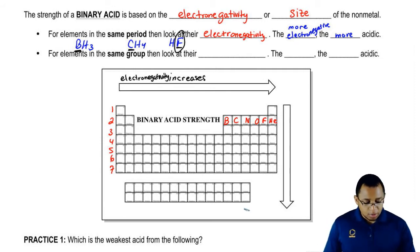And because fluorine is more electronegative than boron and carbon, HF will be a stronger acid than CH4 or BH3. That's the way we apply this. So if they're in the same period, we look at electronegativity.